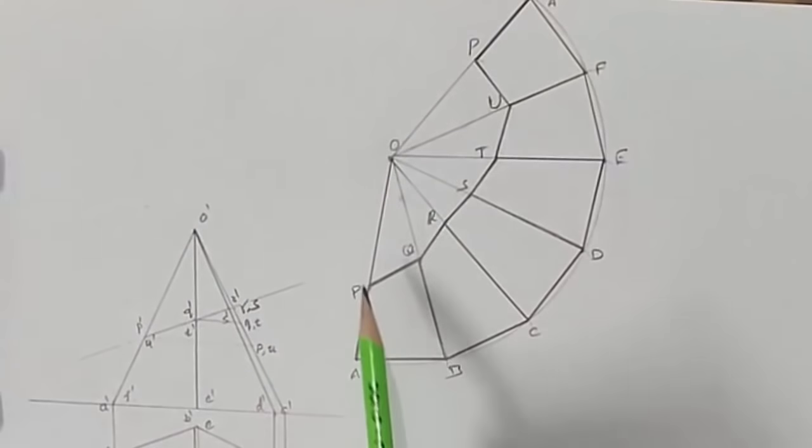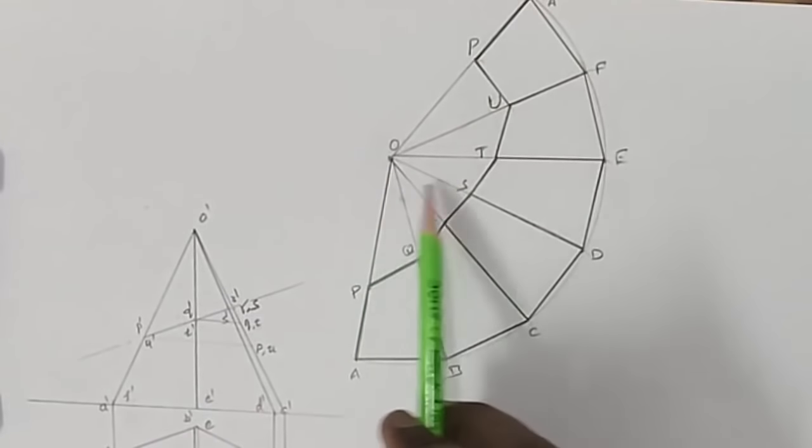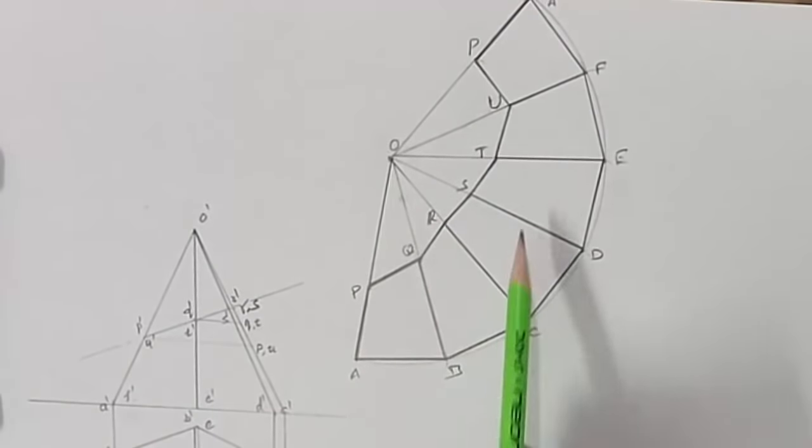So this portion OP, OE, OU, OT are removed and this portion is retained. That's it. Thank you.